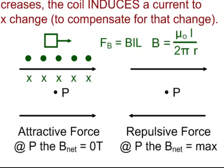That covers everything — electrostatics, circuits, magnetism, and induction. Those are the four main types of problems for electricity and magnetism. Hope it helped. This is Mr. Aiden signing off.